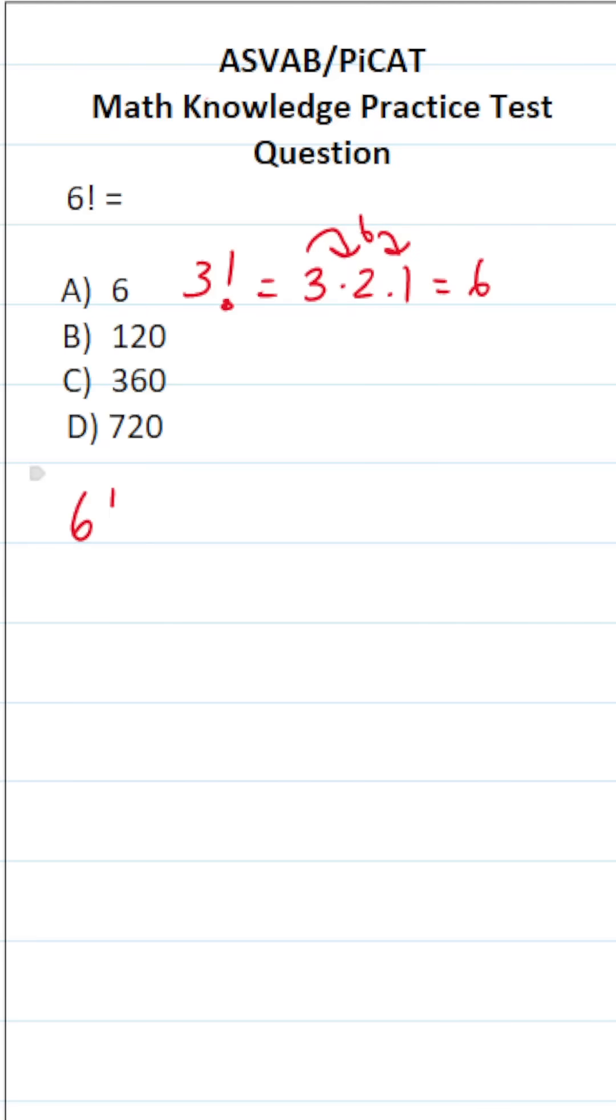Let's go ahead and do the same thing for 6 factorial. We're given the number 6. We're going to multiply it by everything that's less than 6 until we get to 1. So all we have to do is work this out.